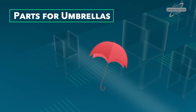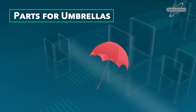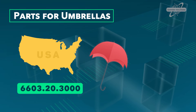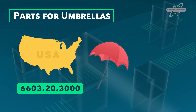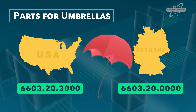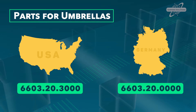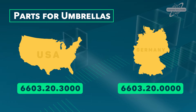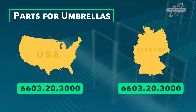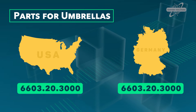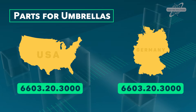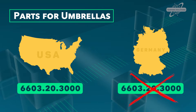For example, if I export parts for umbrellas, they might be identified by one HS number in the US. But in Germany, the correct number ends in four zeros. If I use the US number on the commercial invoice, the German importer's paperwork could be rejected.